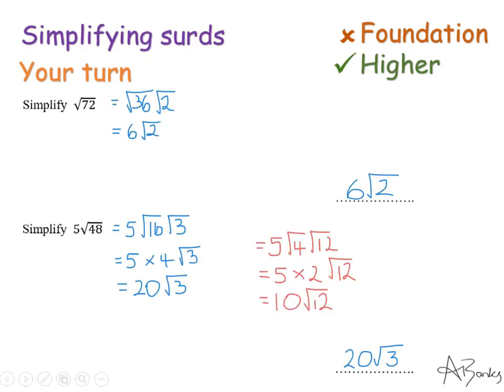Here's the answers. So the first one, the biggest square number is 36. So the final answer is 6 root 2. And the second question, the biggest square number that goes into 48 is 16. So you end up with 20 root 3.